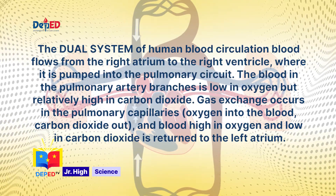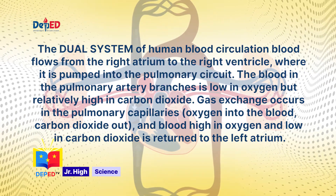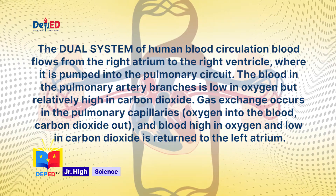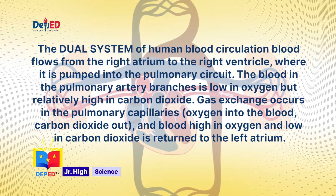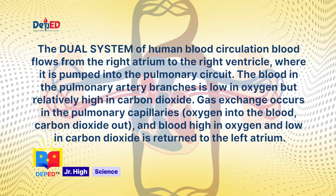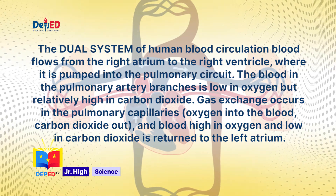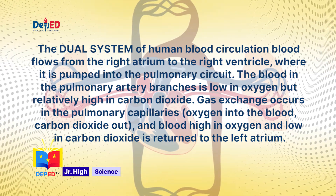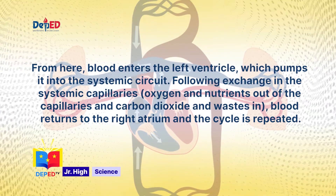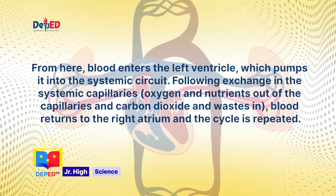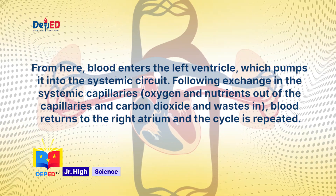Dual System of Human Blood Circulation: Blood flows from the right atrium to the right ventricle, where it is pumped into the pulmonary circuit. The blood in the pulmonary artery branches is low in oxygen but relatively high in carbon dioxide. Gas exchange occurs in the pulmonary capillaries, and blood high in oxygen and low in carbon dioxide is returned to the left atrium. From here, blood enters the left ventricle, which pumps it into the systemic circuit. Following exchange in the systemic capillaries, blood returns to the right atrium, and the cycle is repeated.